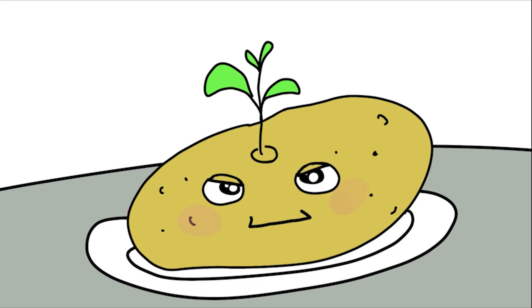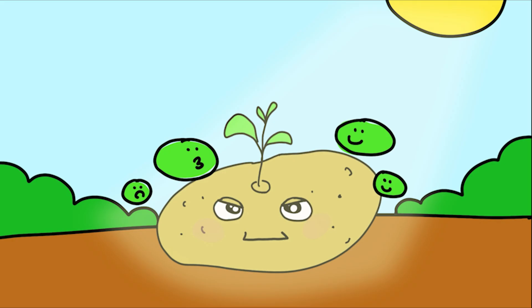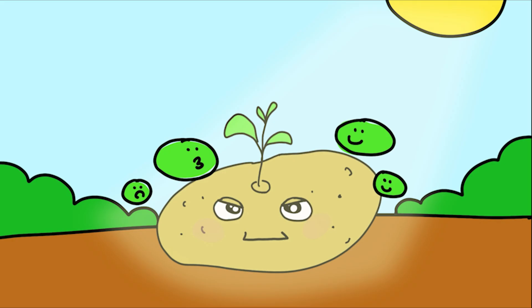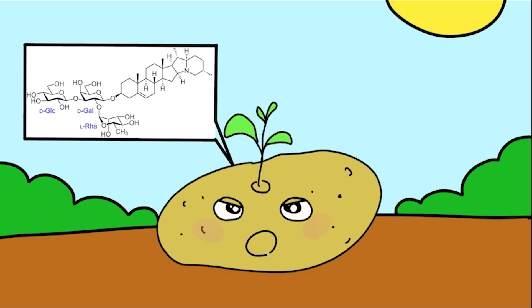Sprouted potatoes, the killer in the dark. Potatoes are a staple, but when they turn green or sprout, they become dangerous. The green color comes from chlorophyll, harmless itself. But at the same time, potatoes produce solanine, a natural toxin. Solanine protects the plant from insects but is highly toxic to humans when concentrated.